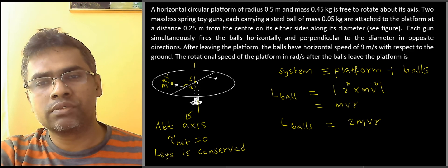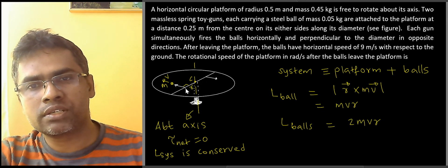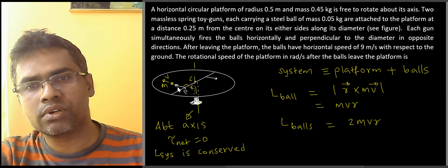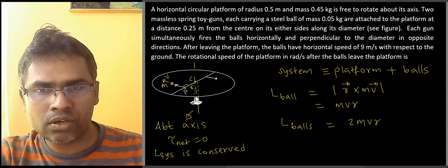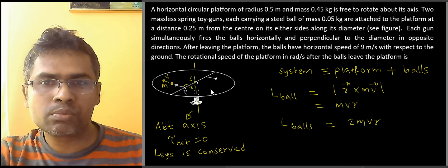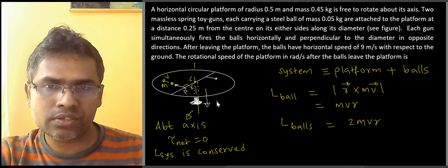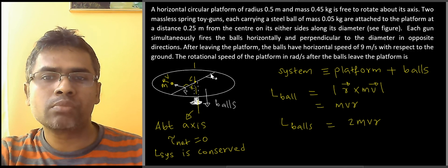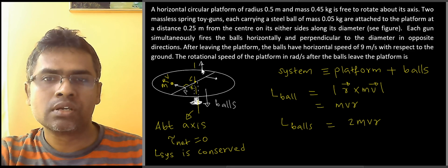Let us say if you point the four fingers of your right hand from C to this point, let us call it T, and then curl them towards the velocity vector, your thumb actually points in the downward direction. So the angular momentum of the balls is in the downward direction, that is the direction of the angular momentum of the balls.